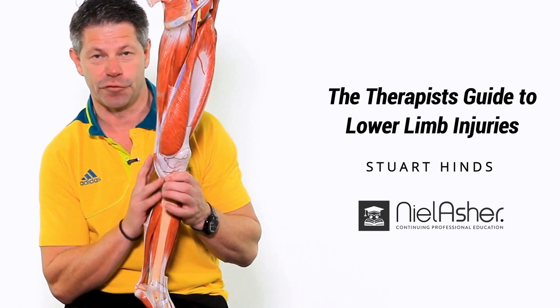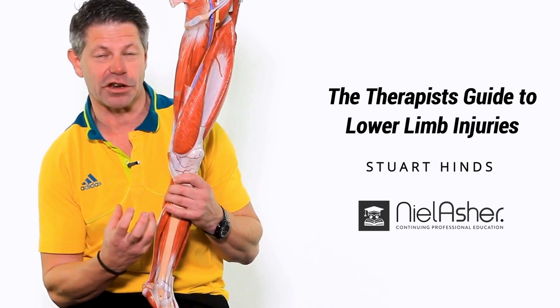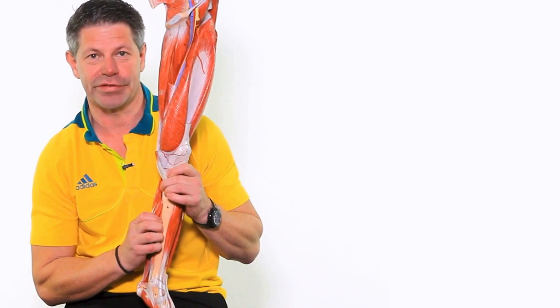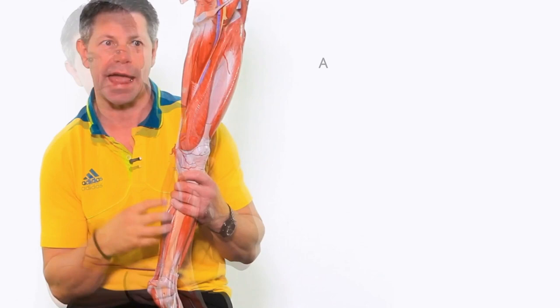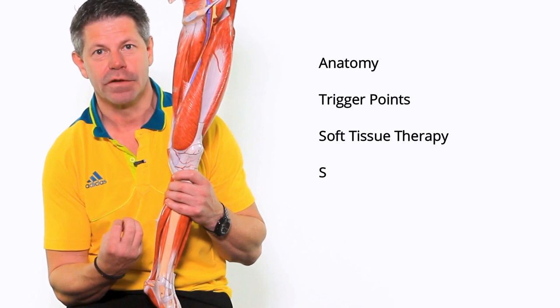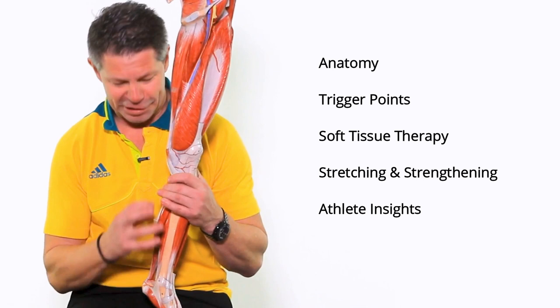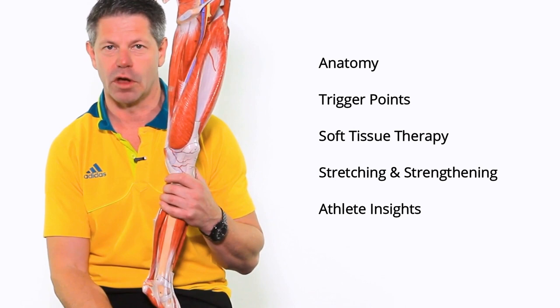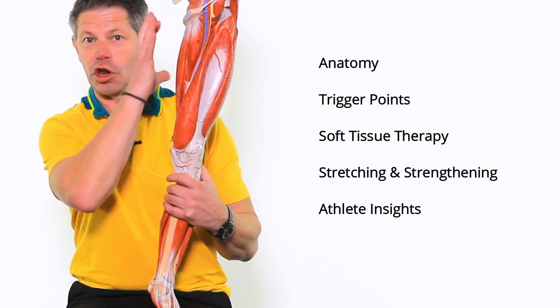In the lower limb course, we'll do a full anatomical overview of the areas and talk about three conditions and how they can coexist together: medial tibial stress syndrome, Achilles tendon pain, and plantar fasciitis. We'll show effective treatment techniques and also speak with Monica, our Olympic athlete, who's experienced each of these conditions firsthand — giving a real-life case study perspective.